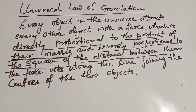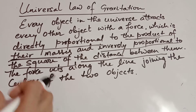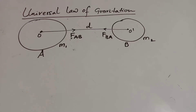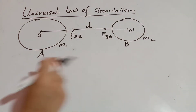That force acts along the line joining the centers of the two objects. Now let's understand this in a mathematical way and prove the formula of the universal law of gravitation.